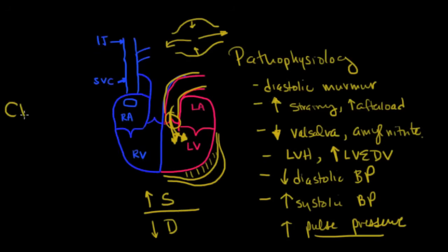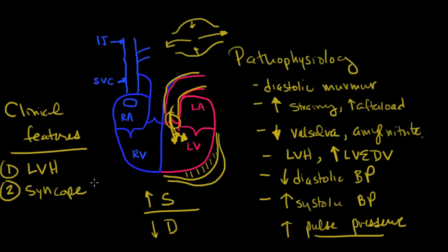So let's quickly talk about some of the clinical features that you might see. As we mentioned, you're going to see LVH, left ventricular hypertrophy, or a left ventricular end diastolic volume which is increased. The other thing that you might see is syncope, just like we saw in aortic stenosis. However, there's a couple of reasons why you might see that here. The first is that if the diastolic pressure is so low that you can't maintain an adequate perfusion, you're going to see syncope.